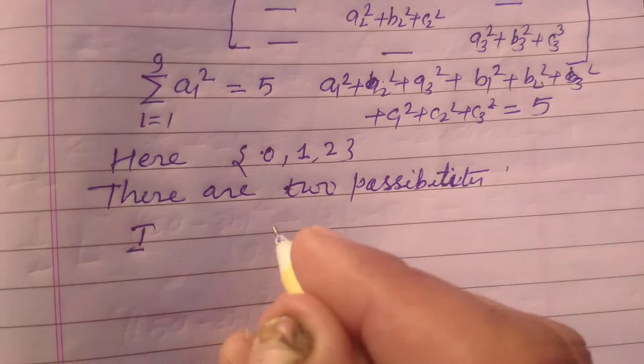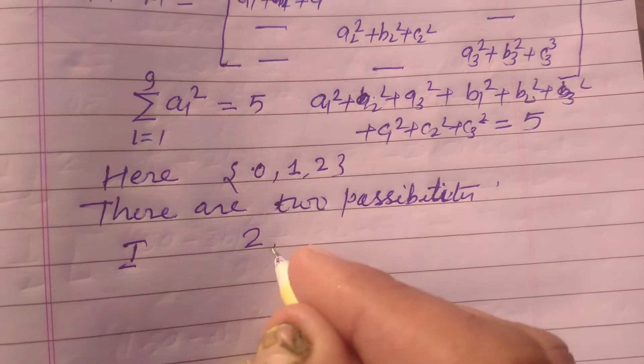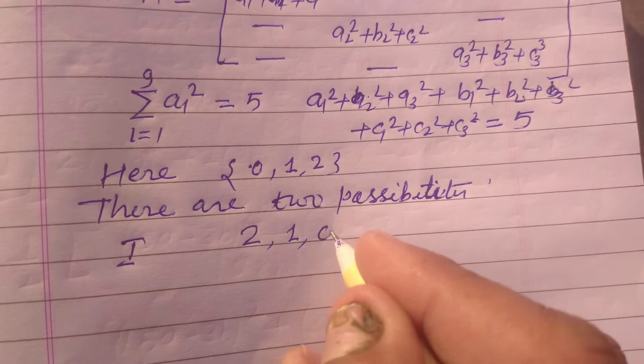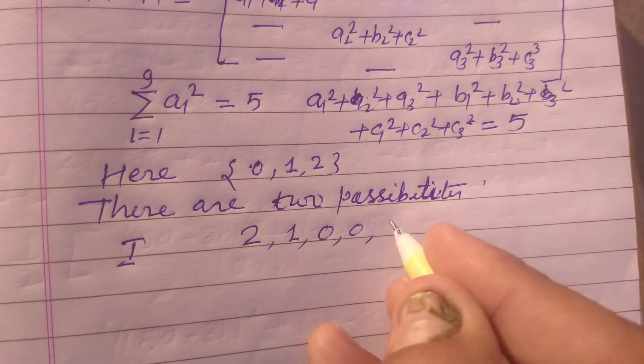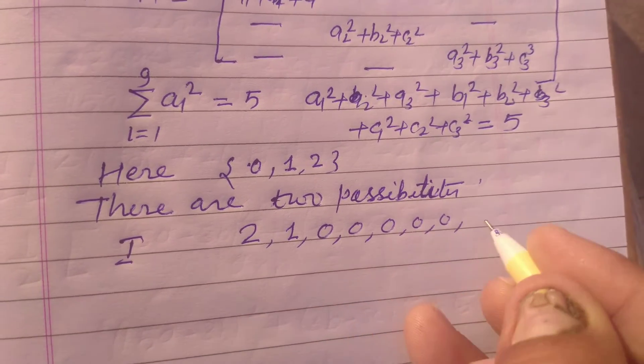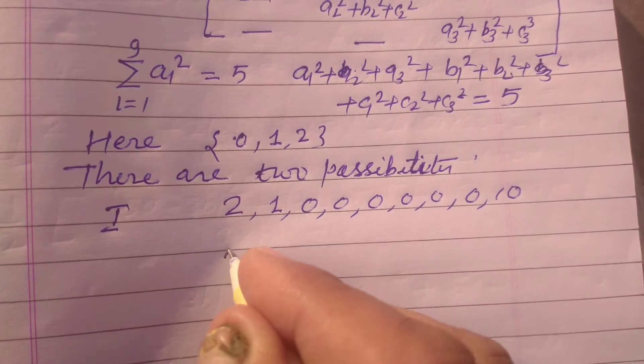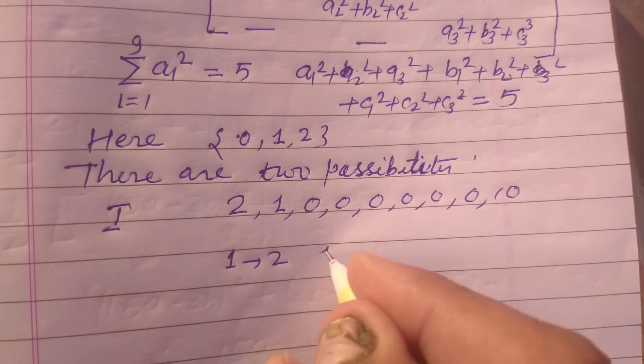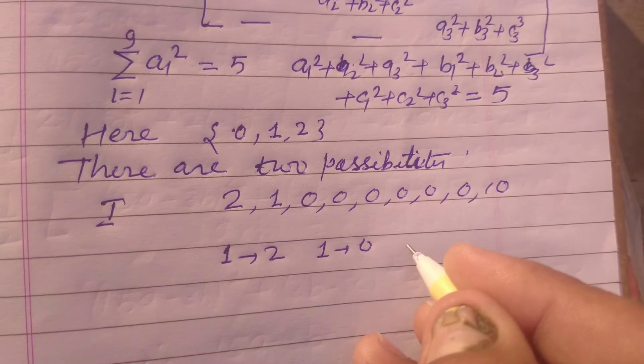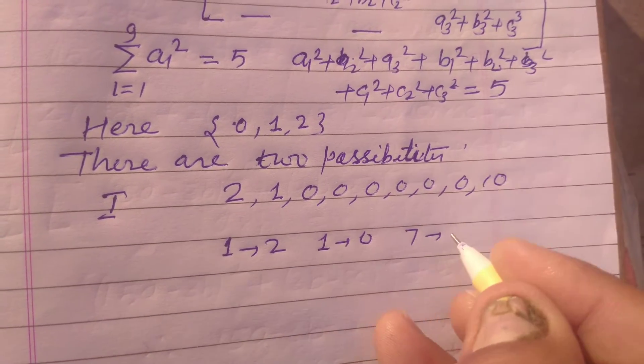Number 1: when we put 2, 1, and others 0. One, two, three, four, five, six, seven. So here we have one is 2, one is 1, and seven are 0.